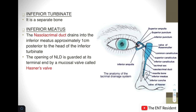So as we have established, there can be three to occasionally four turbinates: inferior, middle, superior, and supreme turbinate. And there are three meatuses: the inferior, middle, and the superior meatus. We will be talking about each one of them.